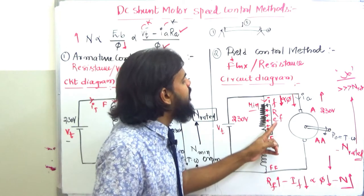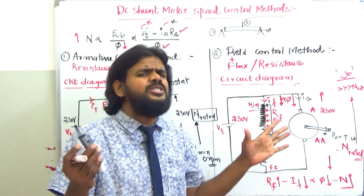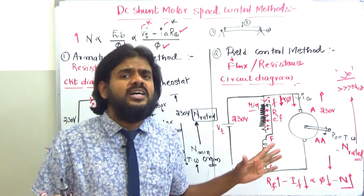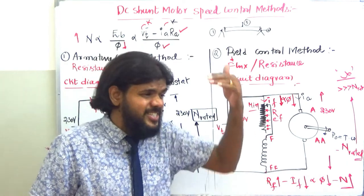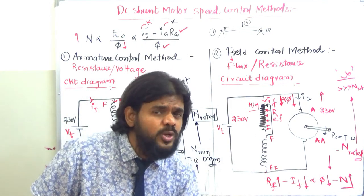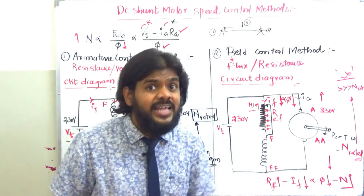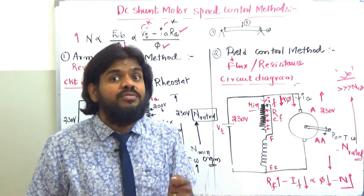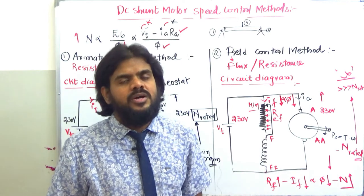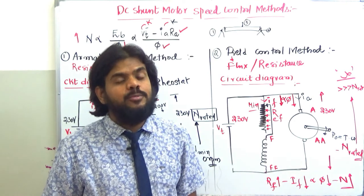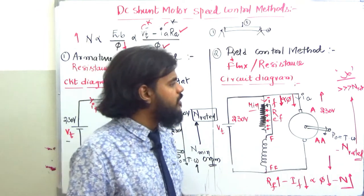It is theoretically possible to get very high speeds approaching infinity if you introduce an extremely high resistance in series with the field winding, bringing flux close to zero. This is not practical, but it illustrates the concept.